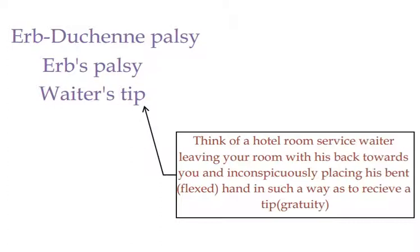It is due to traction or tear of the upper trunk of the brachial plexus — C5 and C6 roots. This injury is mainly seen in infants following trauma during delivery.